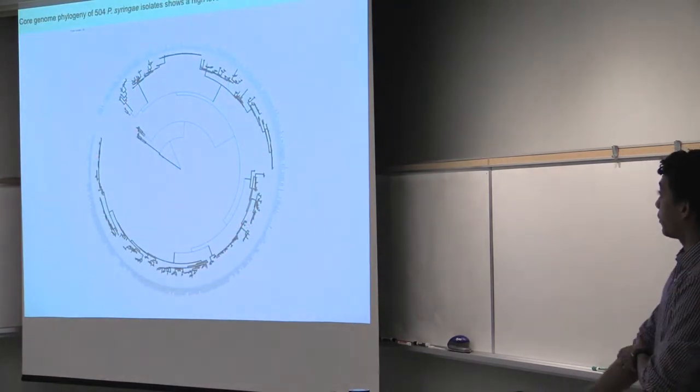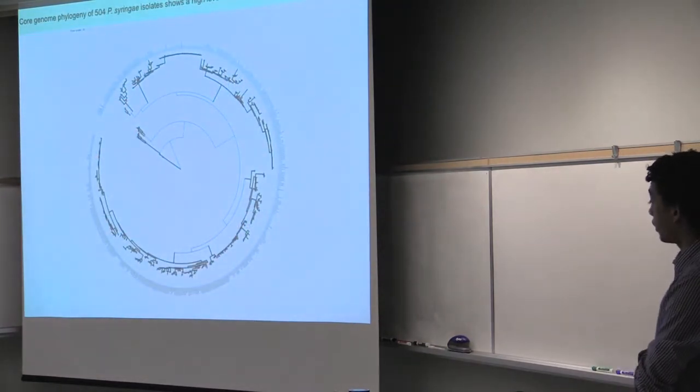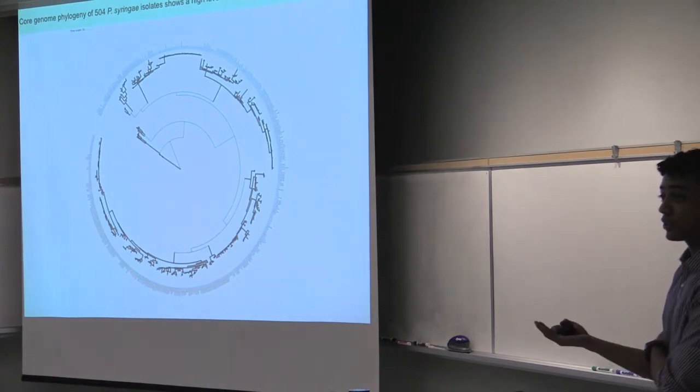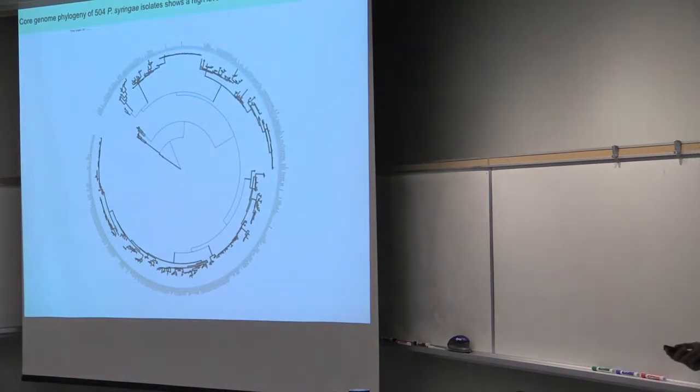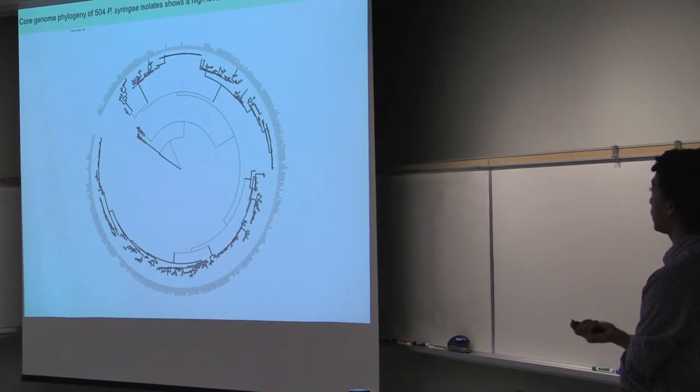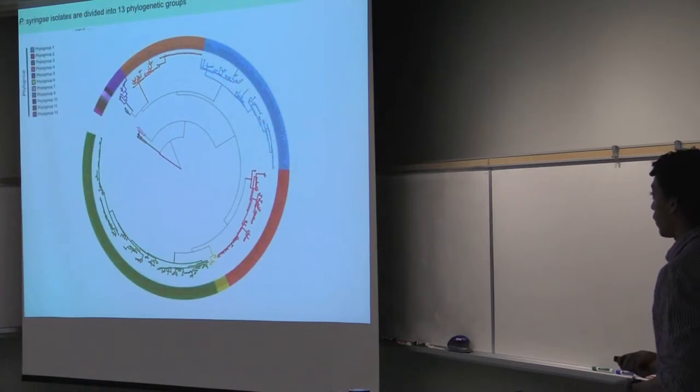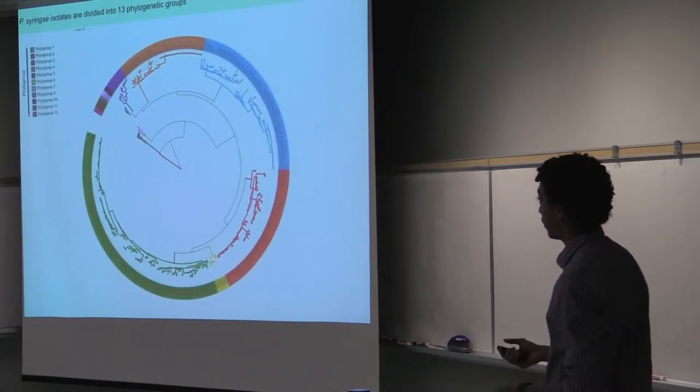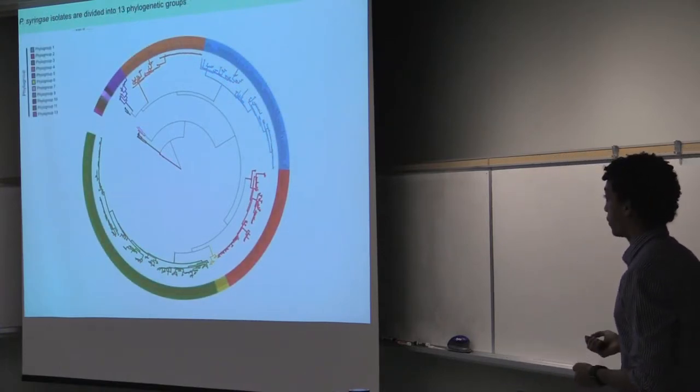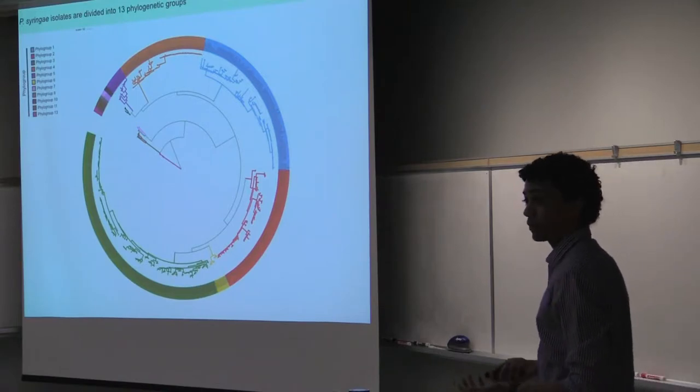And by looking at the core genome phylogeny of 504 Pseudomonas syringae isolates that we have in our dataset, we see that the second case seems to be true. Even though we see a high amount of variation among these isolates, the variation is so high that these isolates were divided into 13 different phylogenetic groups that we also refer to as phylogroups.